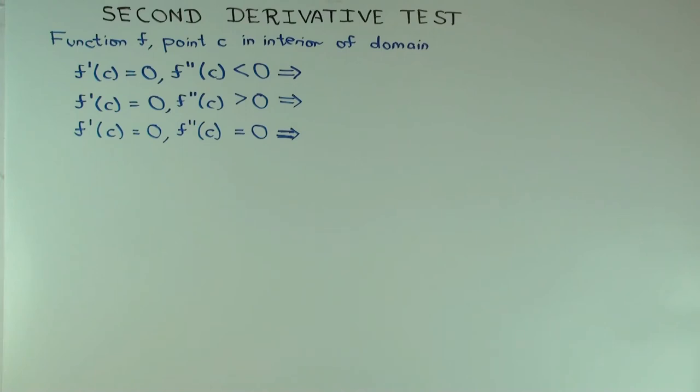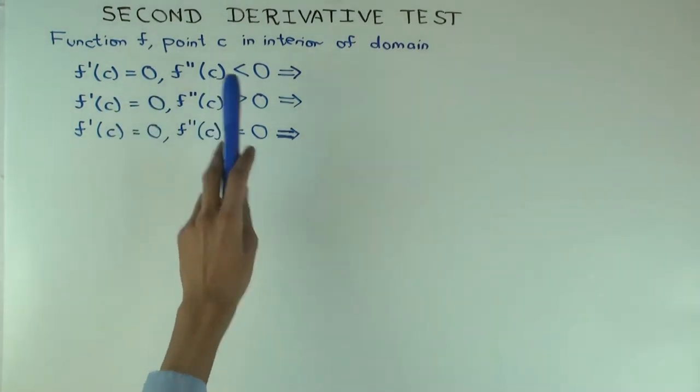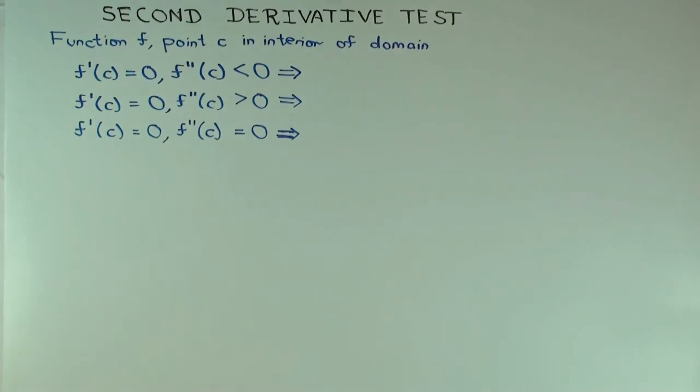Then we can use the sign of f double prime c to determine whether f has a local max or min. Well, not always, but we can try. Okay, so the first case. So in all cases, f prime c is zero. Let's say f double prime c is less than zero. What do we get in that case?